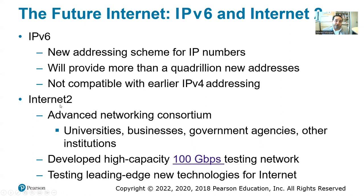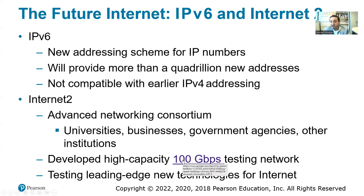Then we have Internet2, an advanced network consortium including universities and businesses, going up to 100 gigabits per second. Currently the fastest at our university might reach one gigabit per second. Google Fiber started in Kansas City and Austin around 2015, offering up to one gigabit per second as a test.